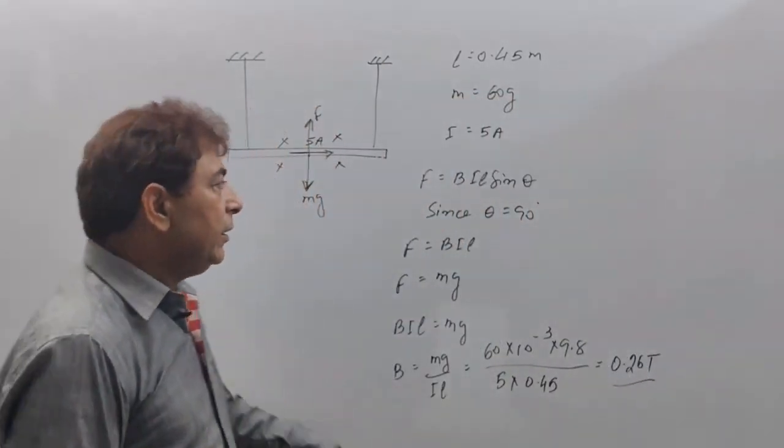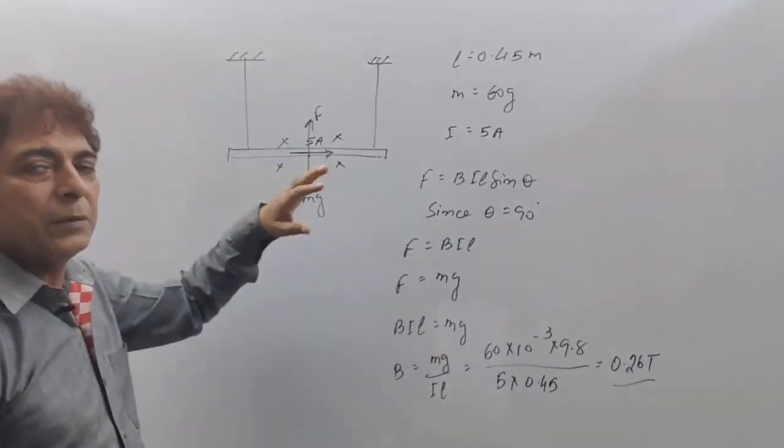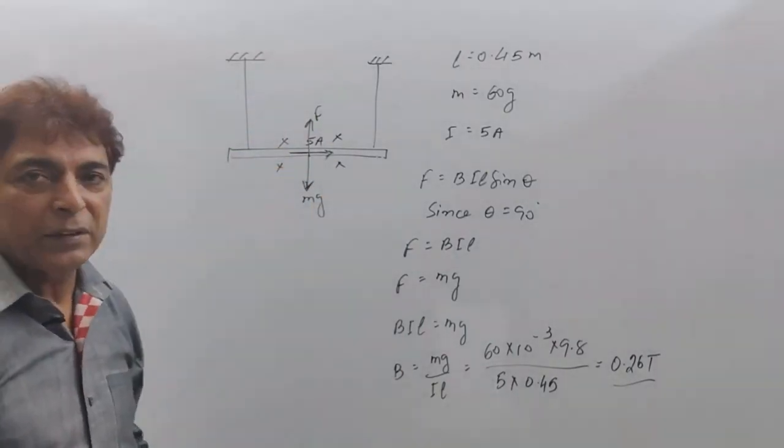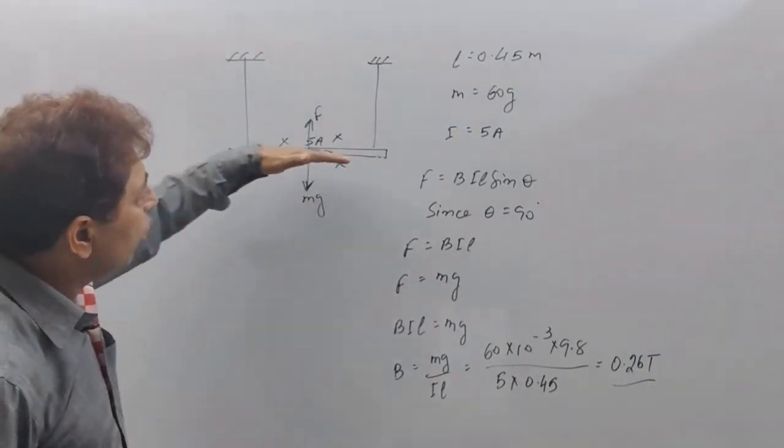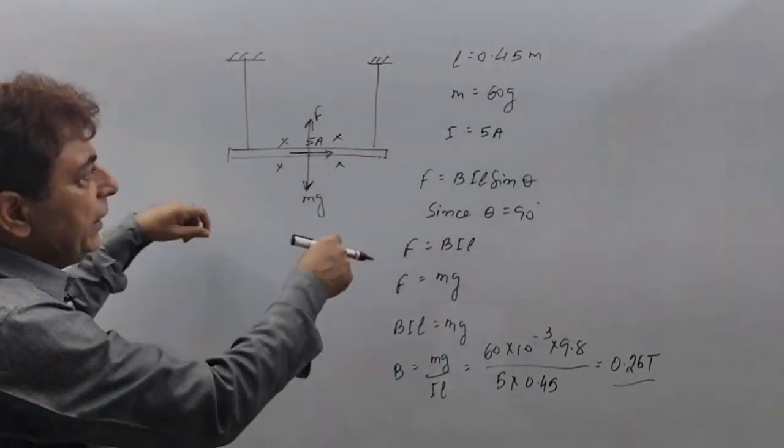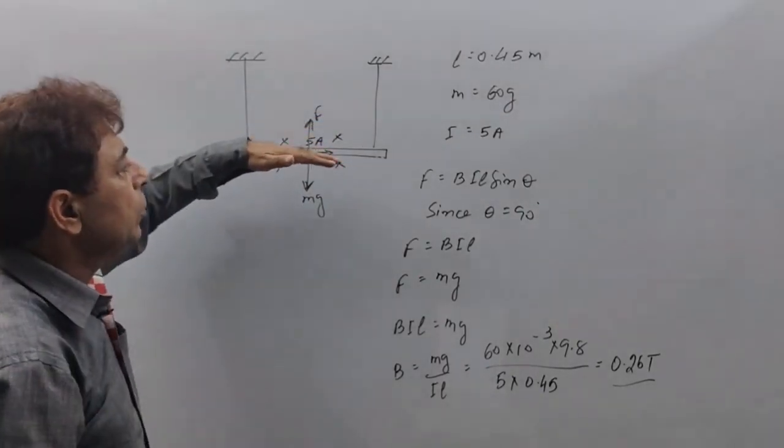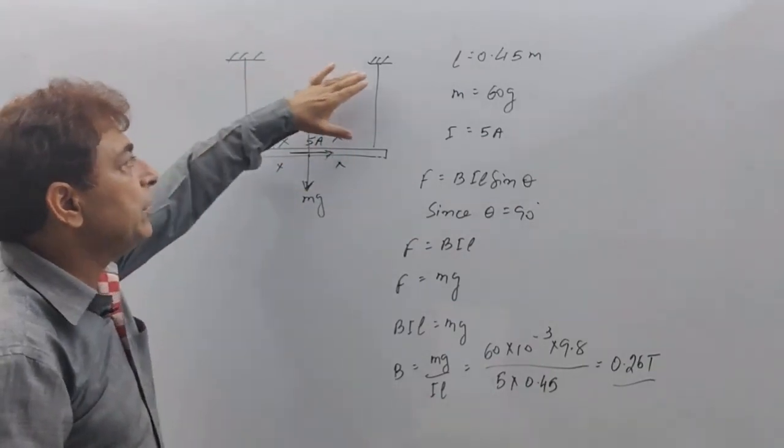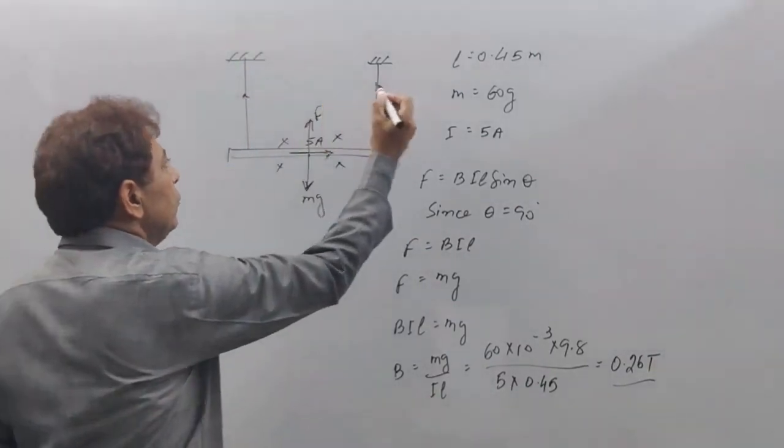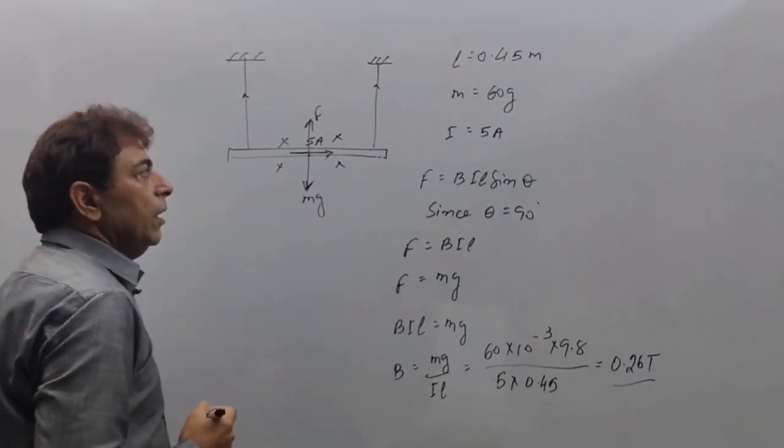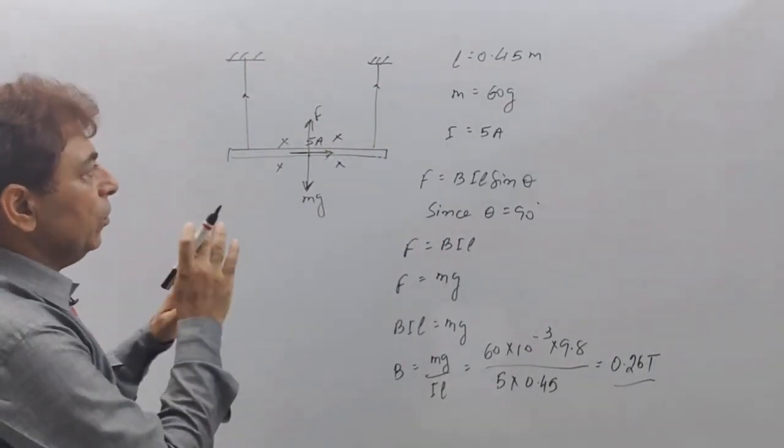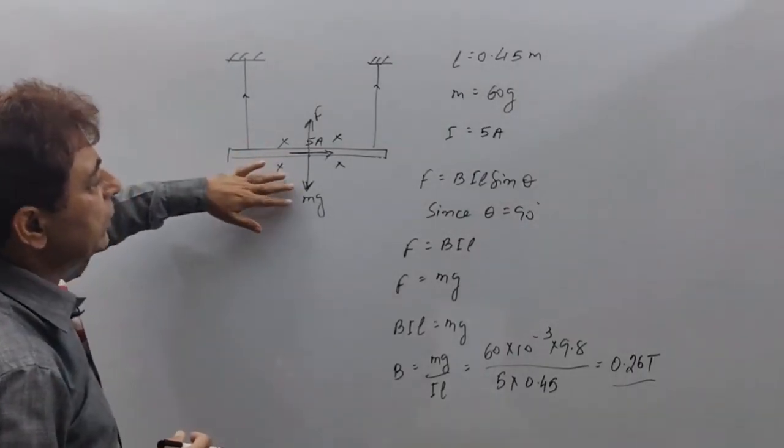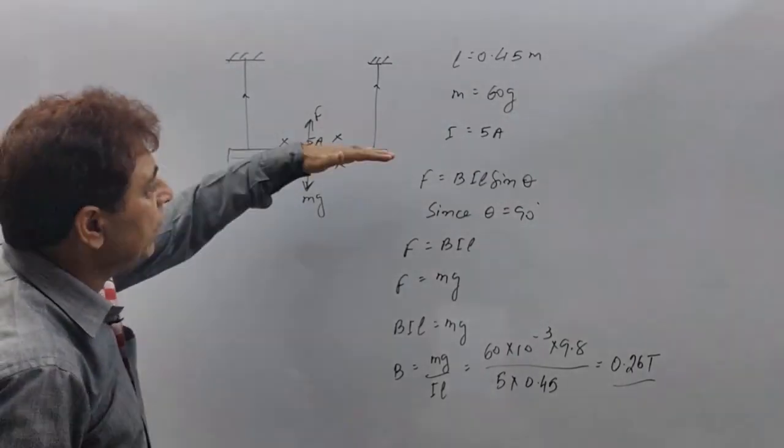A current carrying conductor in a magnetic field experiences force whose direction is given by Fleming's left-hand rule. So if we suspend the rod using these wires, then the weight of the rod causes tension. Now, if we want to reduce the tension to zero, then what should we do? We have to somehow balance this weight. And for that, we pass current through the wire, through this rod and place it in the magnetic field.